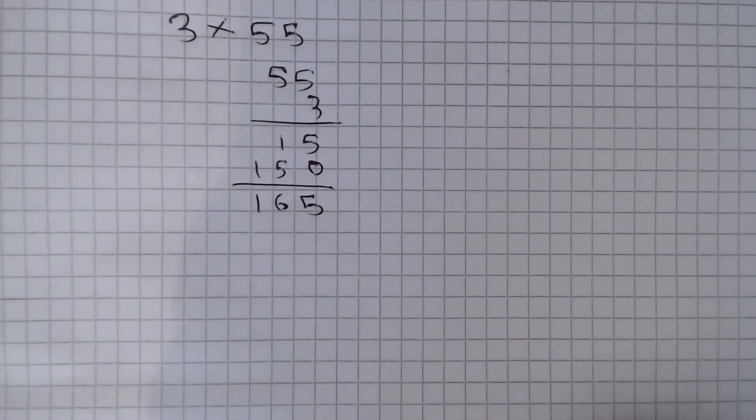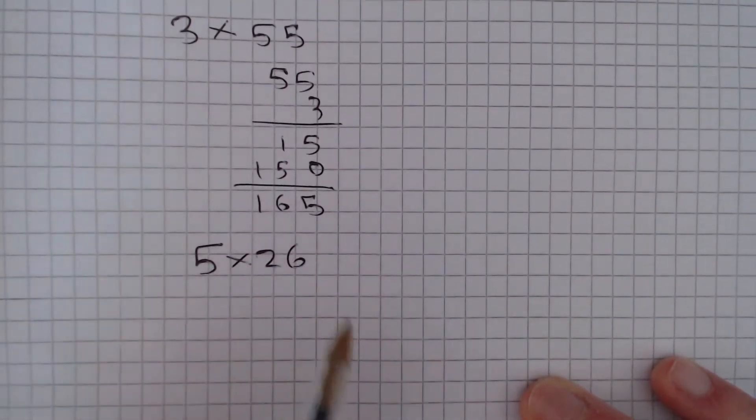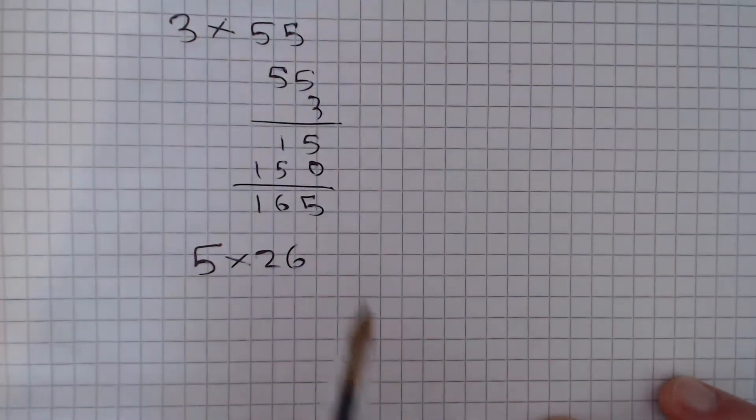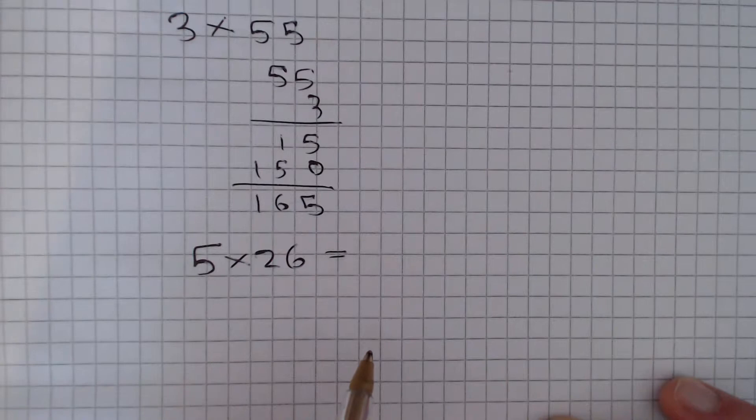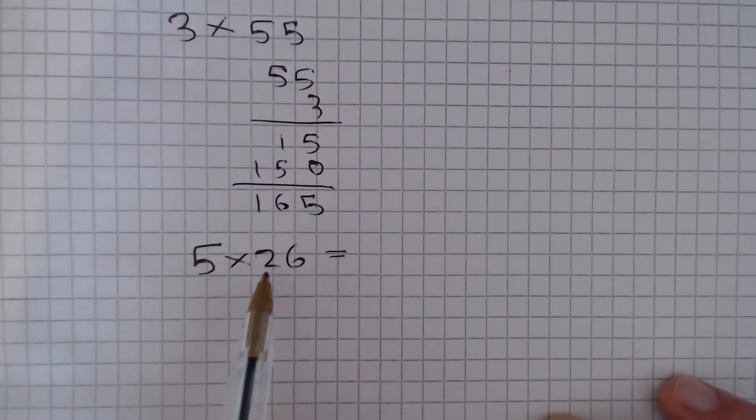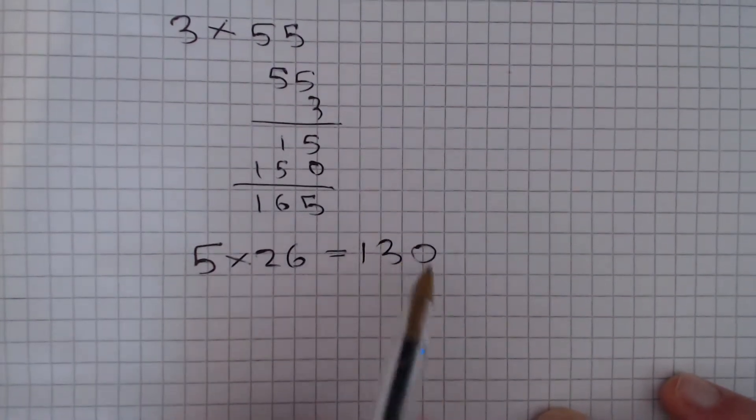But now we've got five classes of 26 pupils so we need to do five multiplied by 26 to see how many pupils are on the trip. And remember, if we multiply a number by five, that is the same as multiplying it by 10 first and then dividing the answer by two. So 26 times 10 is 260, divided by two is 130, so that's 130.